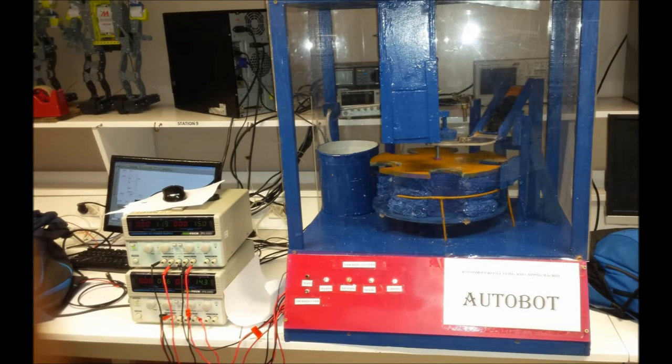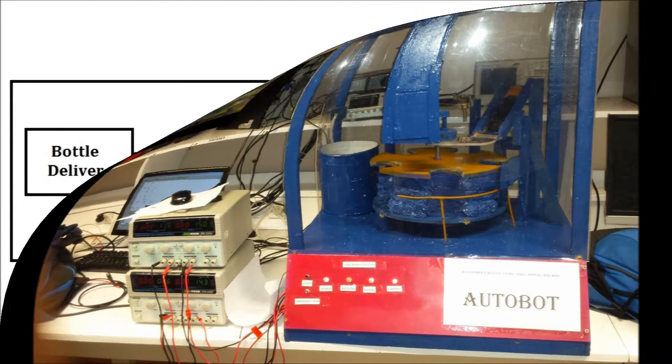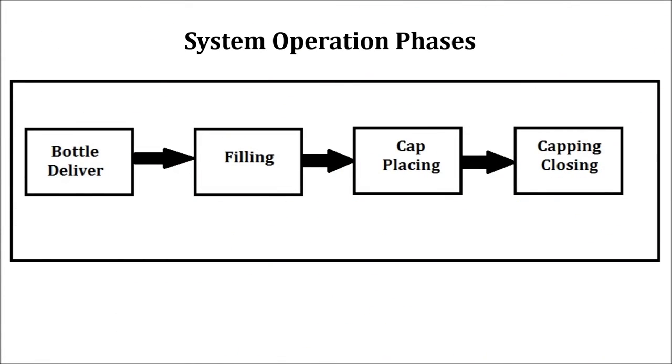Our group has designed and developed an automatic bottle filling and capping machine for the EE363 project. It is a PLC-based system where the inputs are taken from push buttons and limit switches, and the output signals are transmitted to relay modules that control the motors in each phase of the operation.